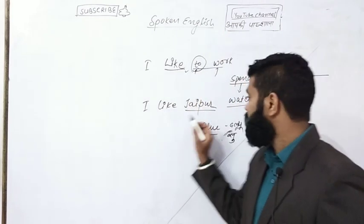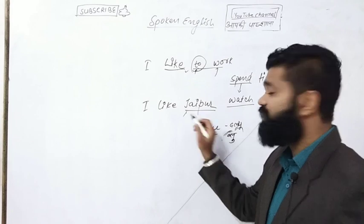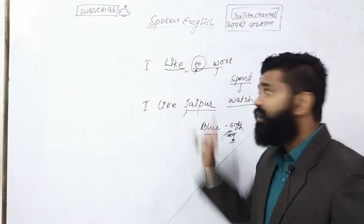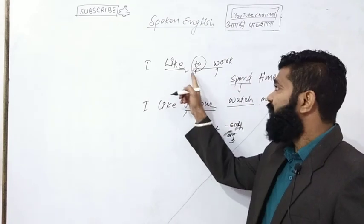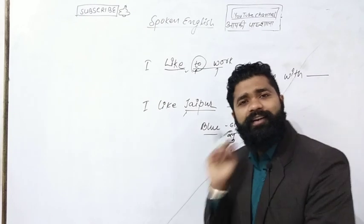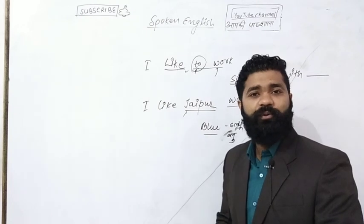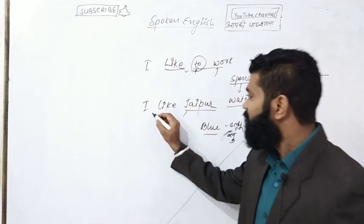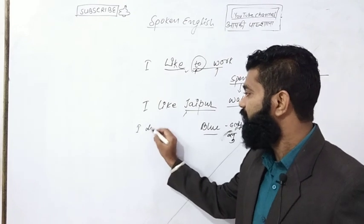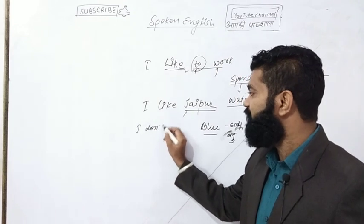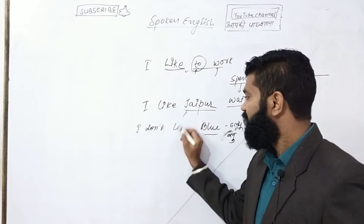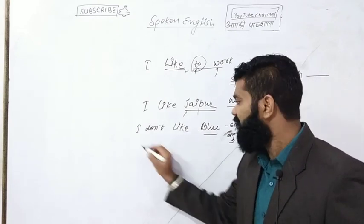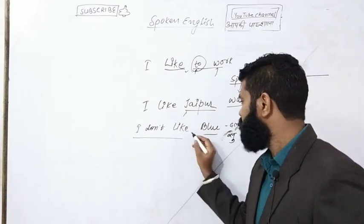तो यह हो गया — किसी भी चीज, किसी भी इंसान, जगह, या काम के बारे में बात करने के लिए 'I like' use करेंगे. अगर work आता है तो 'to' बोल देना है. अगर आपको कोई भी चीज पसंद नहीं है, तो मना करने के लिए कहना है 'I don't like'. मुझे पसंद नहीं है.